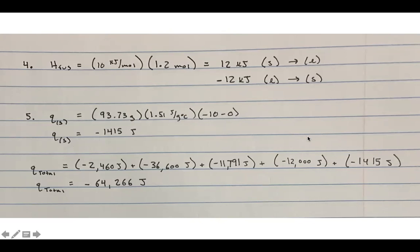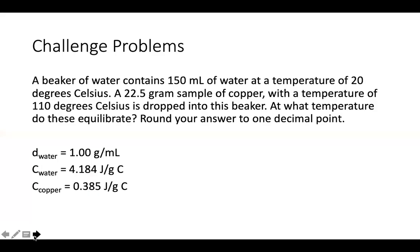Adding all five steps together — converting everything to the same units (e.g., −12 kJ = −12,000 J) — the total heat evolved is negative 64,266 joules, meaning heat was released out of the system during this cooling process.